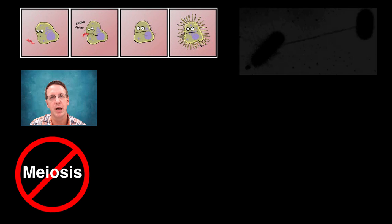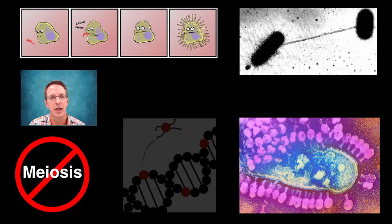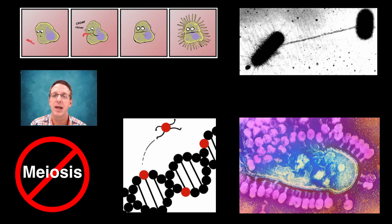So no, bacteria do not have the luxury of using meiosis to generate genetic variation. But with transformation, conjugation, transduction, and transposition, they get the job done just fine. Thanks for watching.